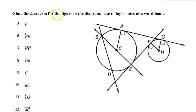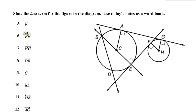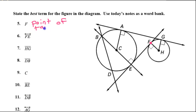State the best term for the figure in the diagram — same as above, just picking the terminology. Point F is right here. That is a point of tangency. There's a tangent line that just barely touches at this point, and that makes it a point of tangency.